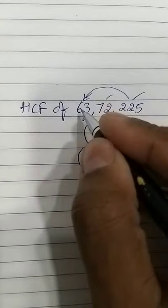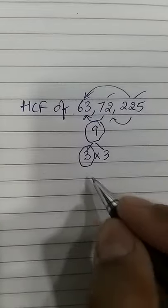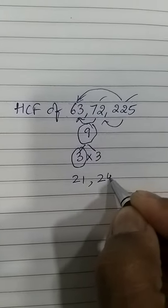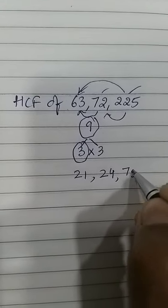So what will you get if you divide 63 by 3? You are going to get 21. 72 by 3 you get 24, and 225 by 3 you get 75.